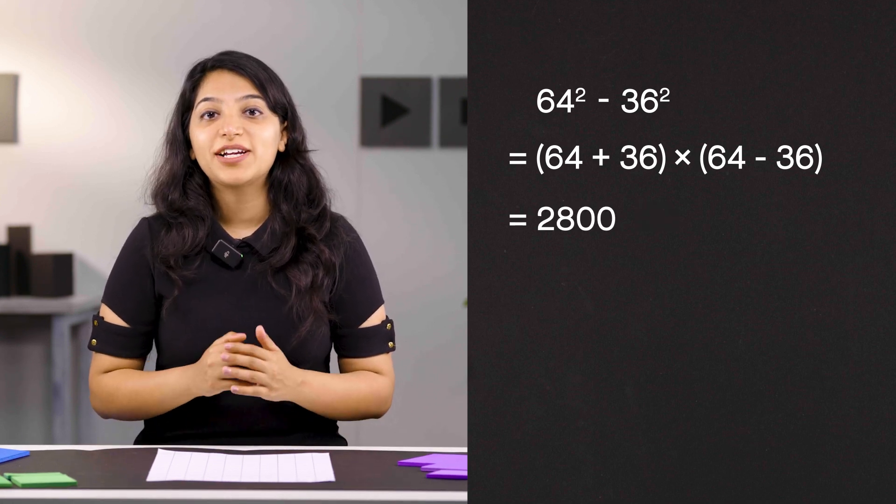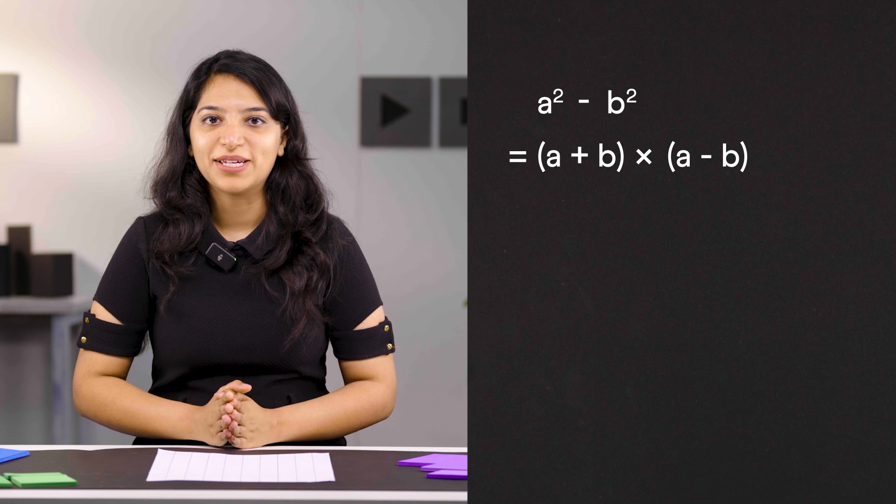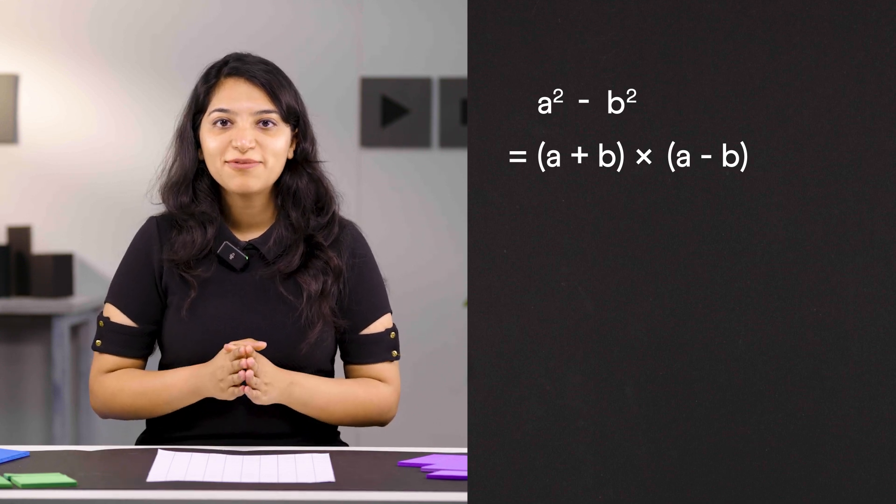This trick works for difference of squares of any two numbers. a squared minus b squared is a plus b times a minus b. But where does this formula come from?